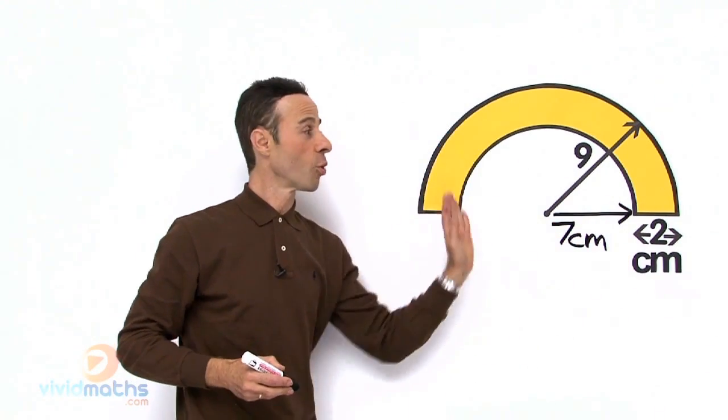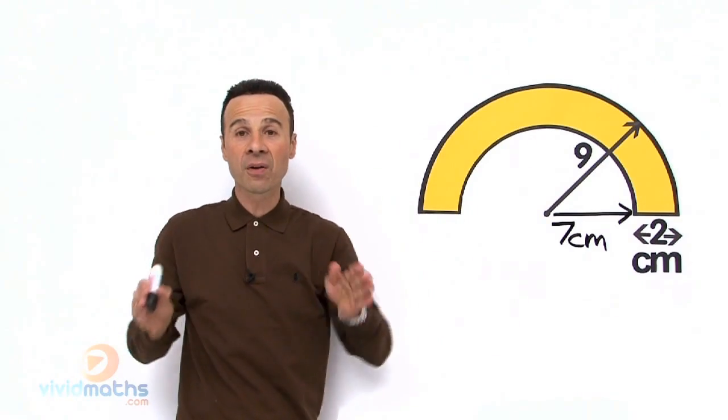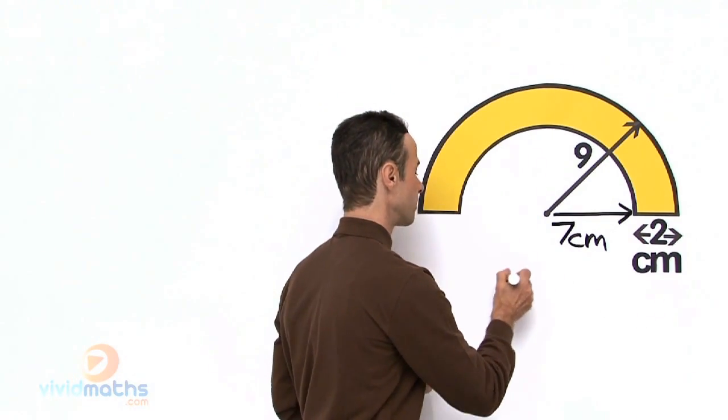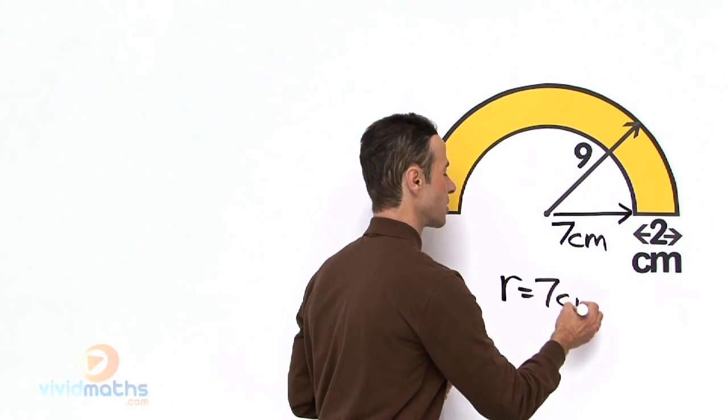So the small radius, the white part in here, the inside part of the rainbow is 7 cm. So let us write that down, so little r equals 7 cm.